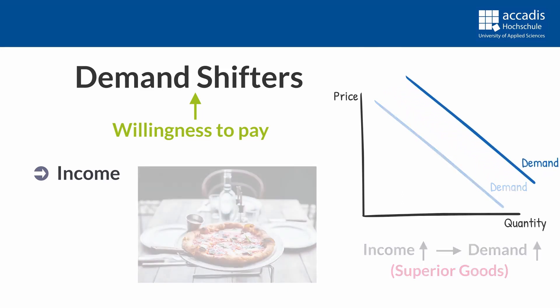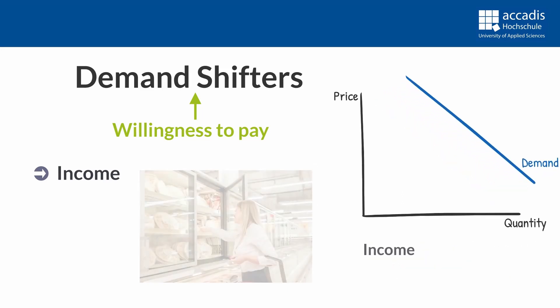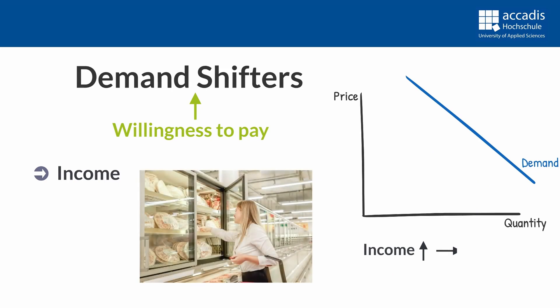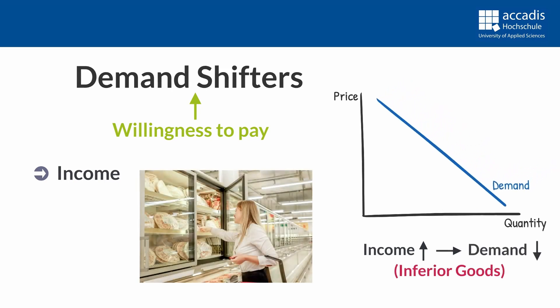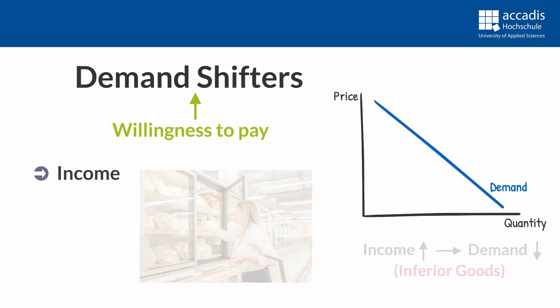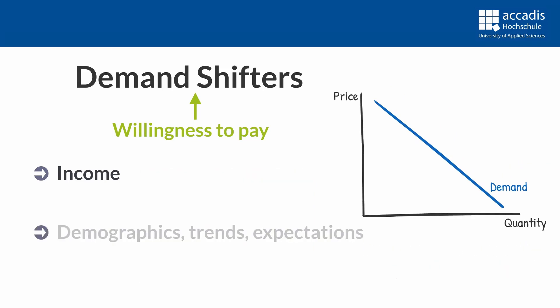For certain goods, this relation might be opposite - those are so-called inferior goods. So if you get a higher income, you might eat more pizzas at the nice restaurant, but you may eat less frozen pizza from the supermarket. Other reasons may include demographics - more customers means more demand - as well as trends, expectations, and developments on other related markets.